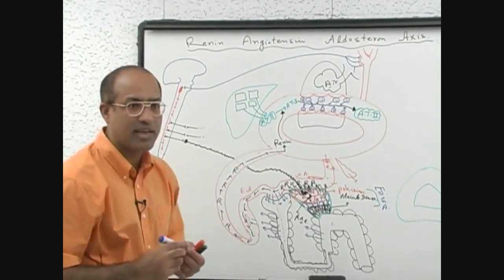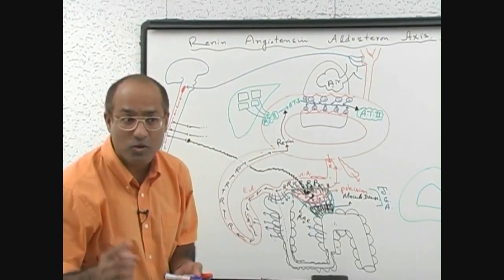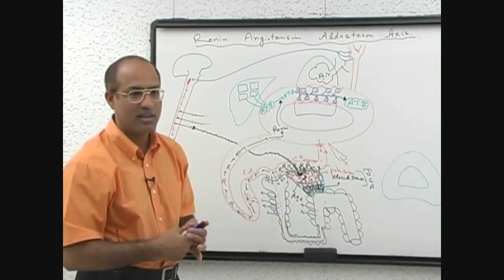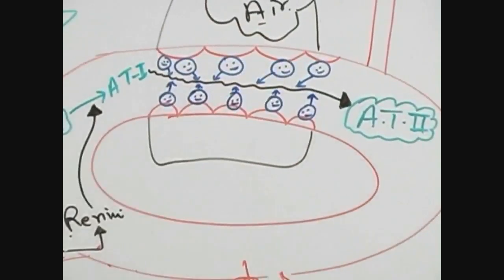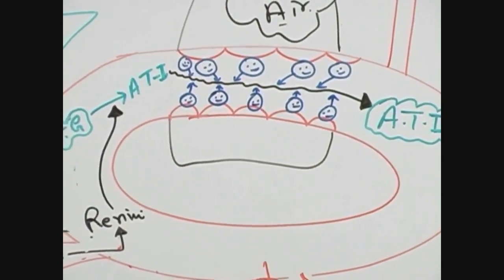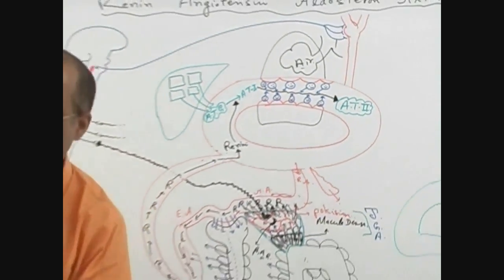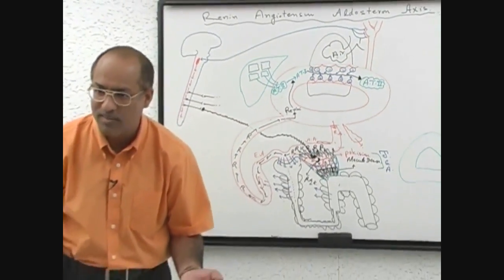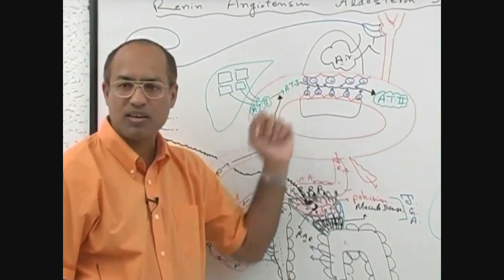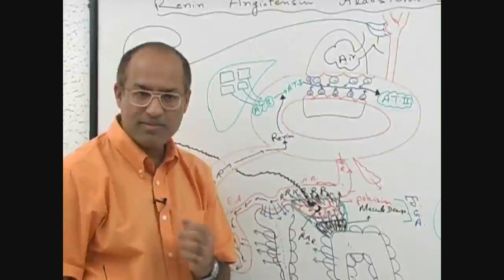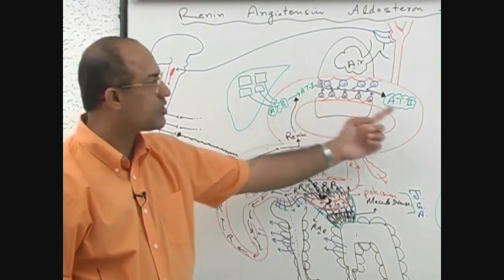When we talk about drugs like captopril, enalapril, lisinopril, or other angiotensin converting enzyme inhibitors, those drugs basically bind with these proteins and block their function. That whole group of drugs called ACE inhibitors essentially bind with these enzymes and block their action of converting angiotensin 1 into angiotensin 2.